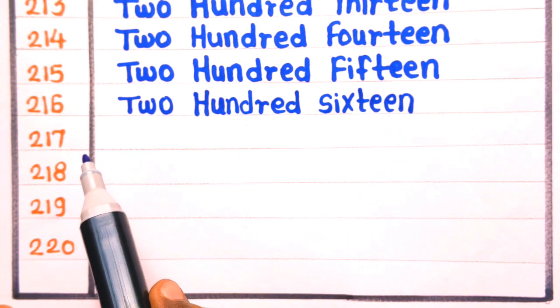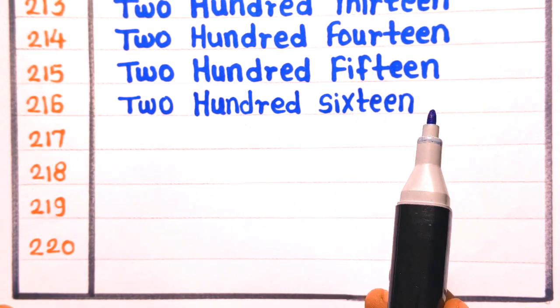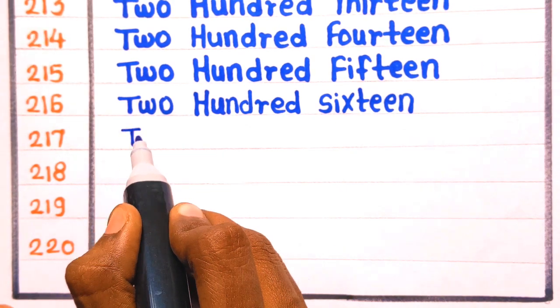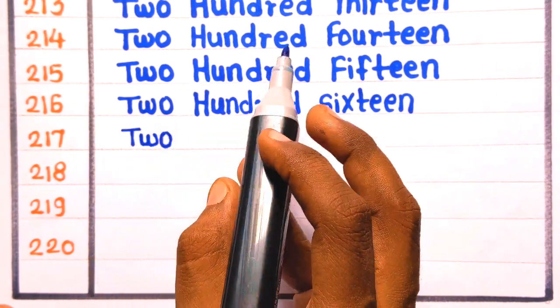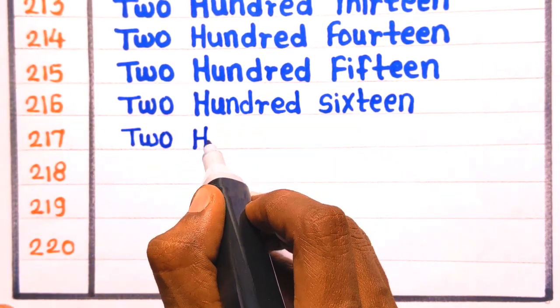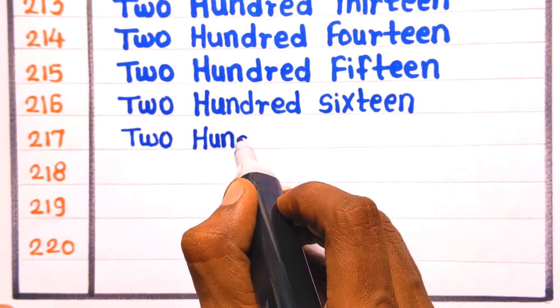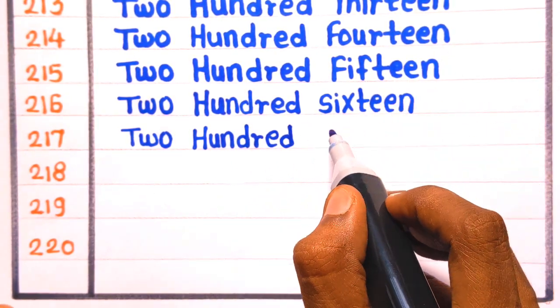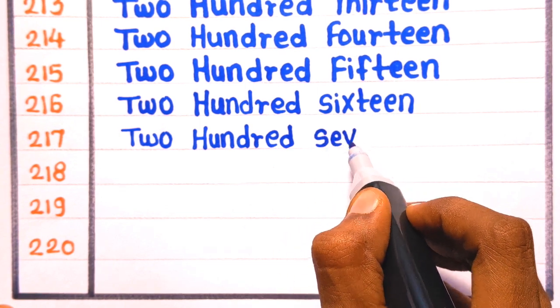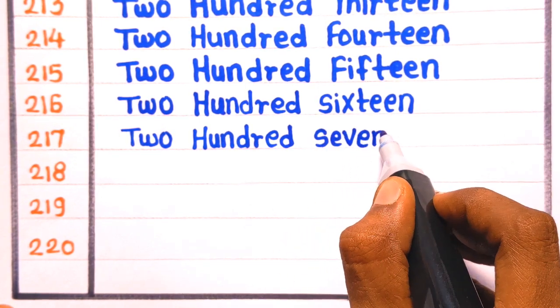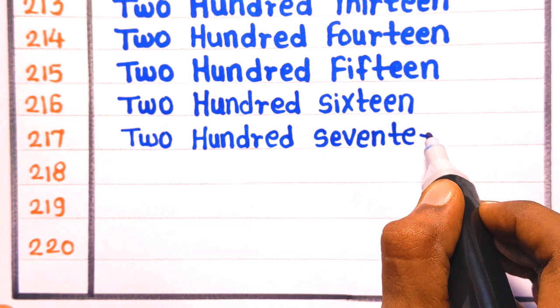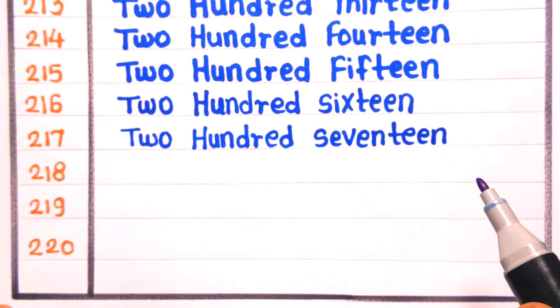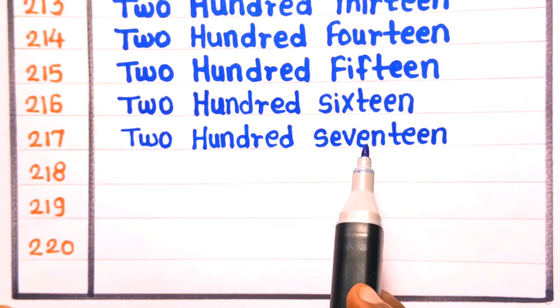Next is 217. T-W-O, two, H-U-N-D-R-E-D, hundred, S-E-V-E-N-T-E-E-N, seventeen. Two hundred seventeen.